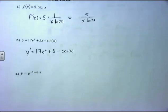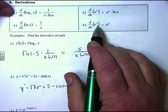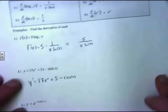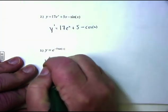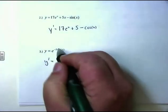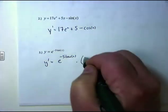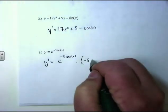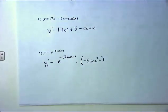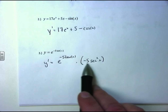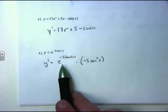Example 3: y equals e to the negative 5 times the tangent of x. This uses the chain rule version of e to a function. The derivative of e to a function is e to the function times the derivative of the exponent. So y′ equals e to the negative 5 tangent of x, times the derivative of the exponent: negative 5 is a constant, and the derivative of tangent of x is secant squared of x. So the derivative is e to the negative 5 tangent of x times negative 5 secant squared of x.